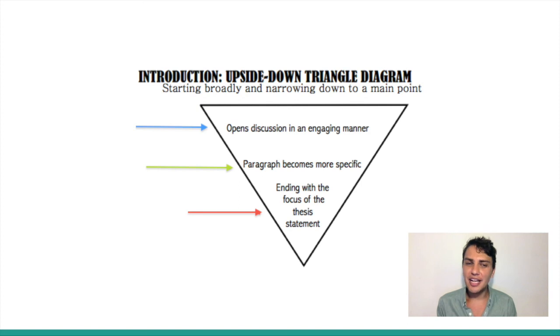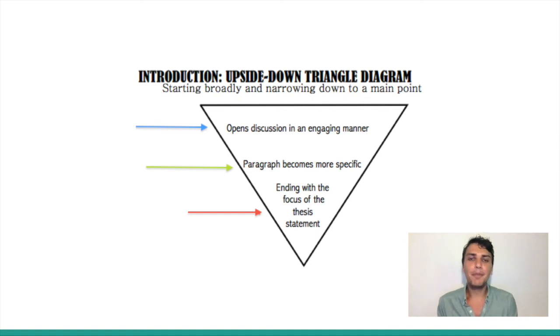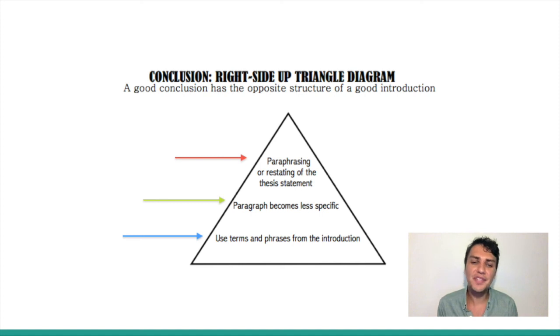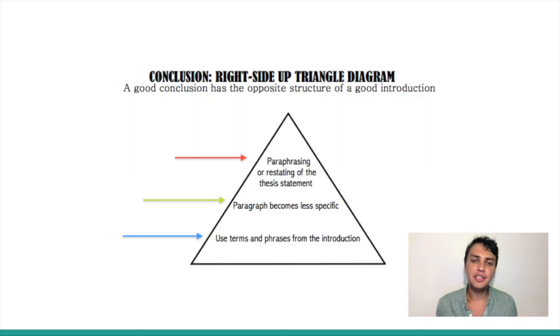Finally, the introduction and conclusion — the beginning and end of your essay. If you visualize it, the introduction looks like an upside-down triangle: you begin broadly, or with an anecdote, something to reel in the reader, and then gradually become more specific until you end with a very focused and precise statement of your research question or thesis statement. A good conclusion has the opposite structure — like an upright triangle. It begins with a focused paraphrase of your thesis, then broadens its scope to show the significance of that argument in a larger context. I hope these tips have given you some insight into how to write a digital essay for this course. Thank you for watching, and see you again soon.